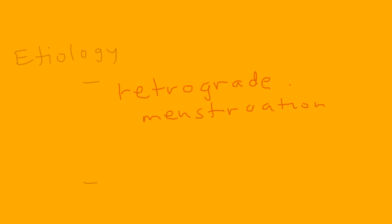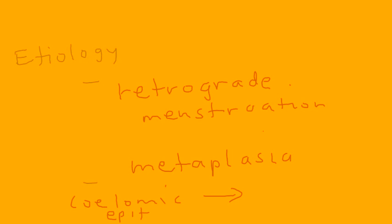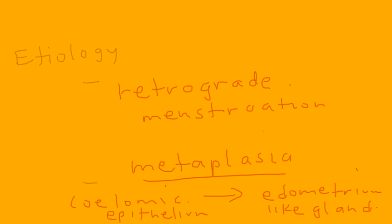The second accepted hypothesis is metaplasia — when a cell transforms from one type to another. In this case, a type of epithelium called coelomic epithelium, under a process of metaplasia, transforms into endometrium-like glands at that location. So those are the two accepted hypotheses for why endometriosis occurs.